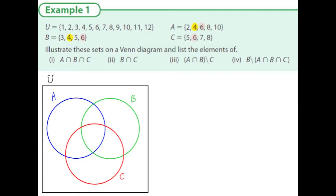Scanning, we see six is in A, B, and C. We notice eight is in A and C, and five is in common in C and B. We're going to place these in first — we want to start with the very center. The element in all three is number six. Element four is in A and B, and eight is in A and C.